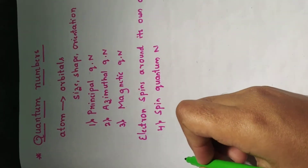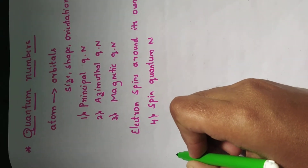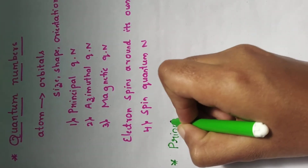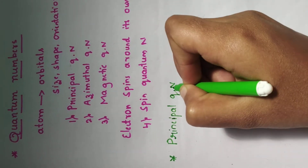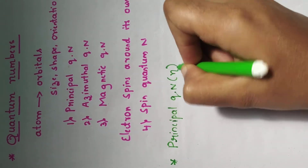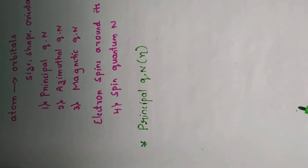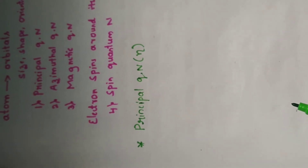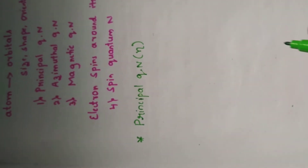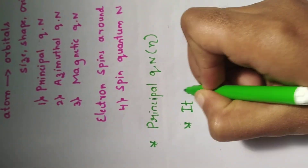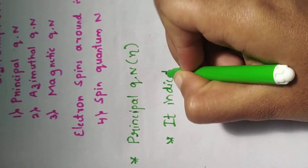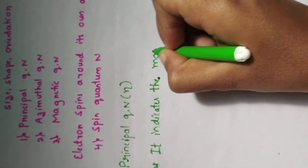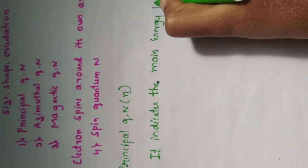The principal quantum number is represented by n. The importance of the principal quantum number is that it indicates the main energy level or the shell to which the electron belongs.